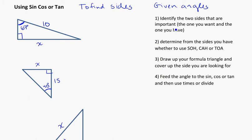So one thing that we need to do is identify the two sides that are important: the one you want and the one you have. So ignore the side that doesn't matter, but let's label what is actually important to us.